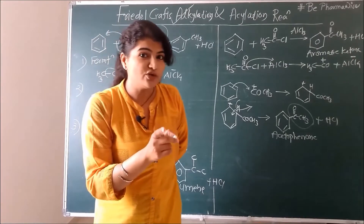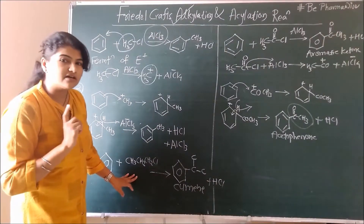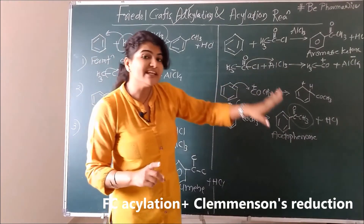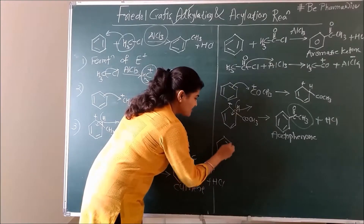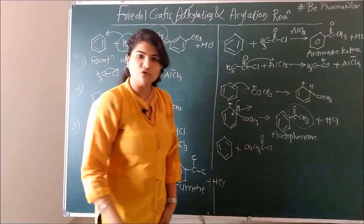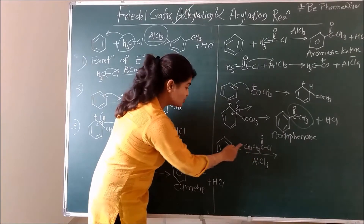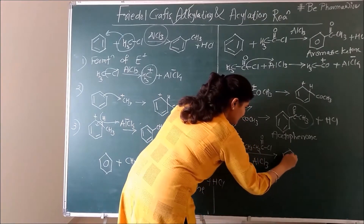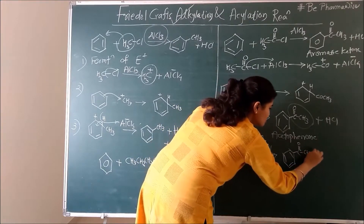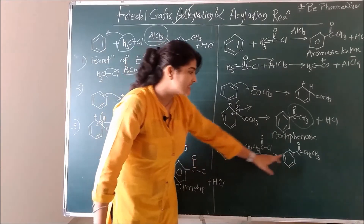Friedel-Crafts acylation can be used to overcome the drawbacks of Friedel-Crafts alkylation. We discussed that N-propylbenzene cannot be prepared using Friedel-Crafts alkylation. But it can be prepared by following the Friedel-Crafts acylation then Clemmensen's reduction sequence. For example, benzene plus CH3CH2COCl — propanoyl chloride — in presence of AlCl3 gives an aromatic ketone: benzene with CO-CH2-CH3 attached. This is ethylphenyl ketone.